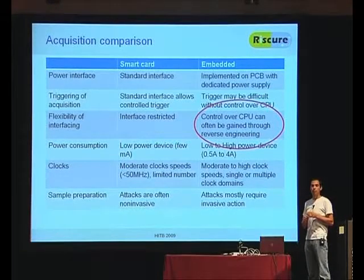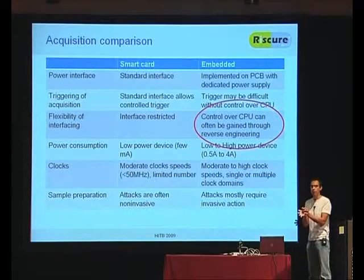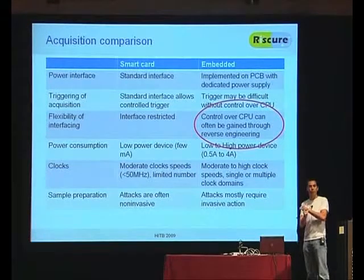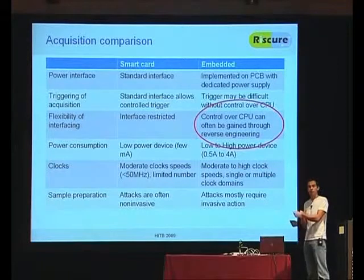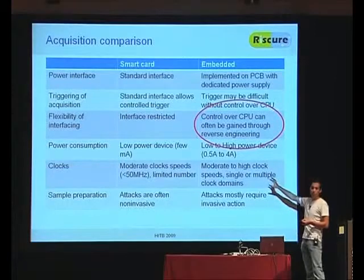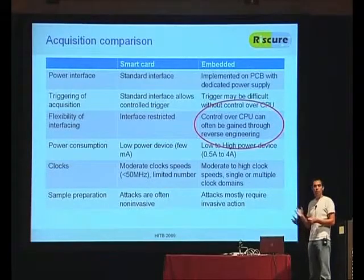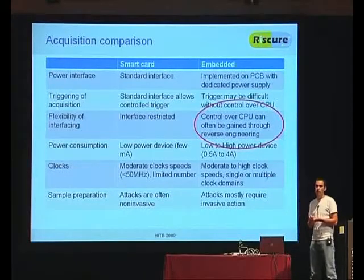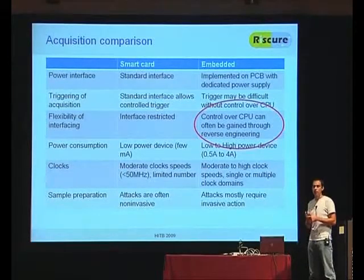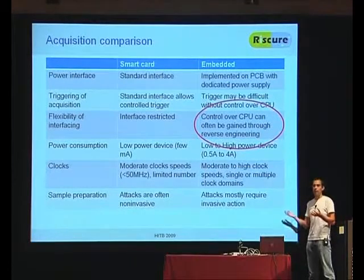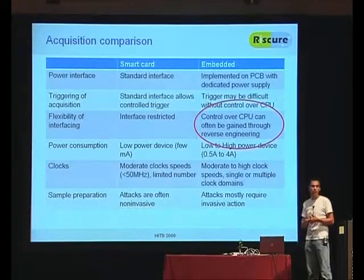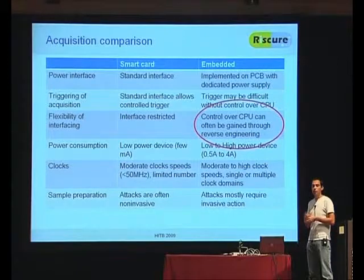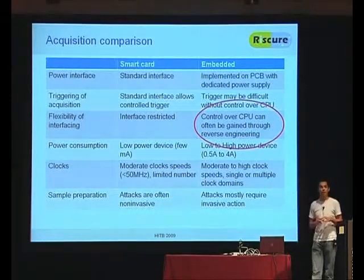Once you gain control, you can start tuning and optimizing the device for the side-channel attack. You can have a trigger very close to the crypto operation, link data very well, turn off clocks or tune the power to reduce noise, and make a better platform. Because clocks are generally much faster, acquisition is also faster. For smart cards we do a few hundred thousand acquisitions a day — maybe 500,000. But for fast chips running at a few hundred megahertz with a hardware crypto engine, we can easily do three to five million a day, which significantly improves statistical attacks and reduces attack time.